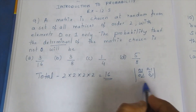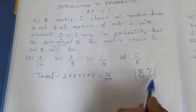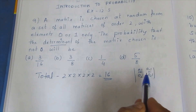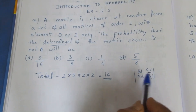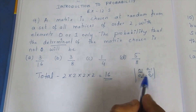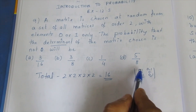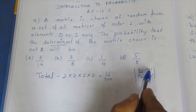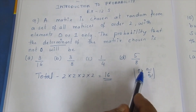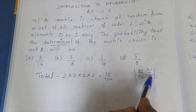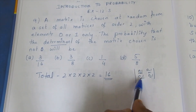Each position has 2 ways to be filled. So the total sample space has 16 possible matrices.